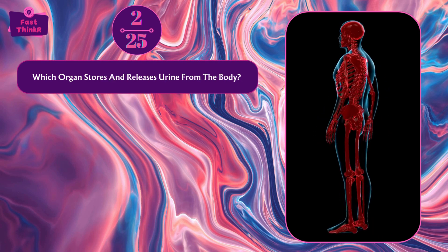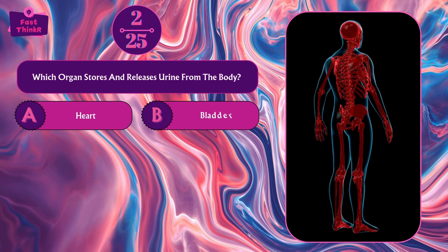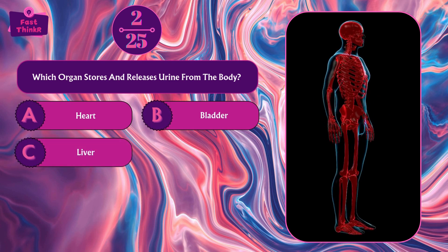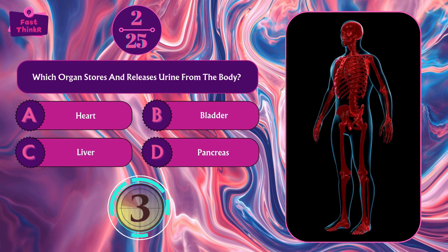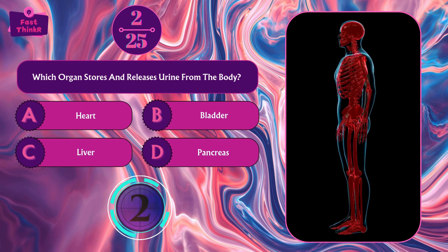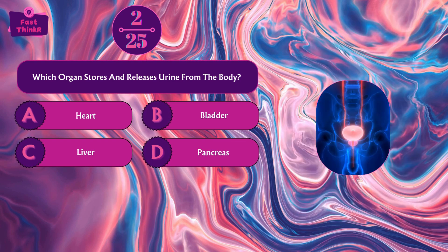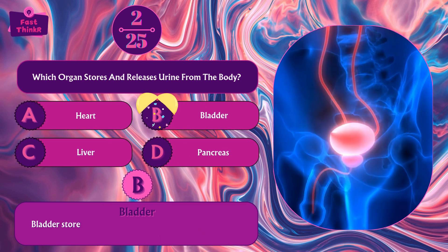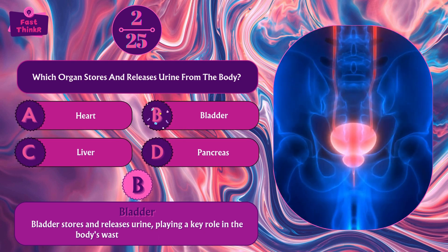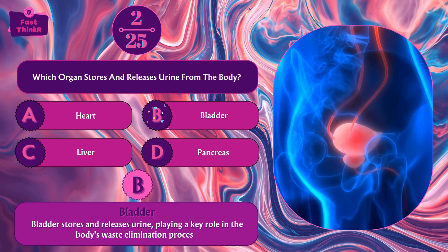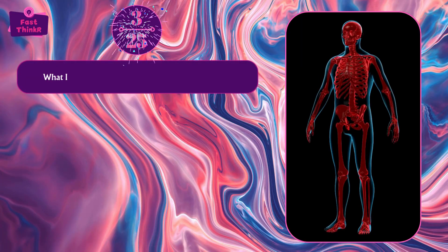Which organ stores and releases urine from the body? Heart, bladder, liver, or pancreas? Option B — bladder. The bladder stores and releases urine, playing a key role in the body's waste elimination process.